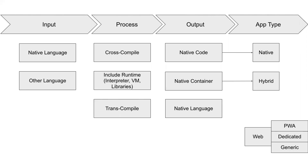A native language is a language officially supported by the platform — that is Swift and Objective-C on iOS, Kotlin and Java on Android, HTML, CSS, and JavaScript on the web. An 'other' language is a language like JavaScript on mobile or ClojureScript on the web. Other languages also include WYSIWYG visual programming interfaces that some no-code multi-platform solutions use.